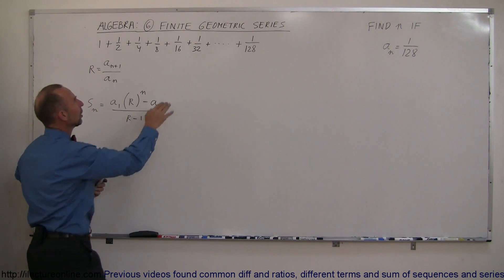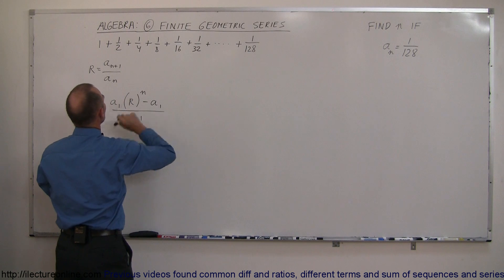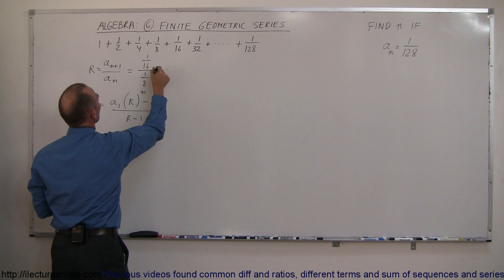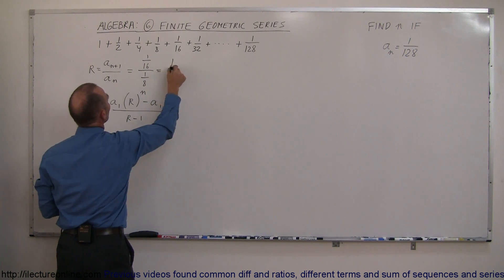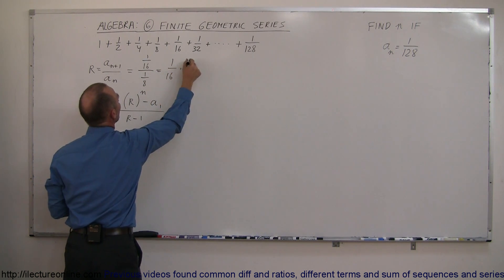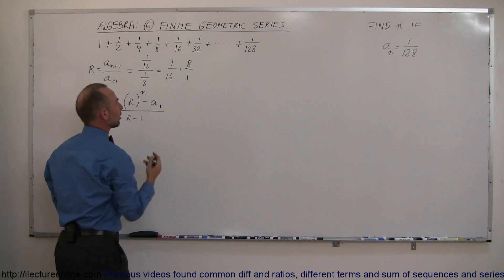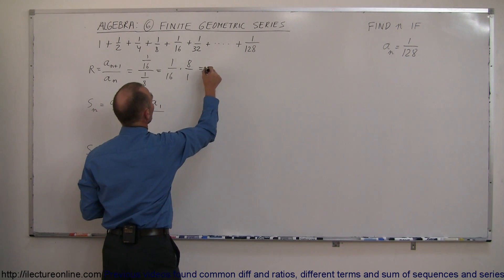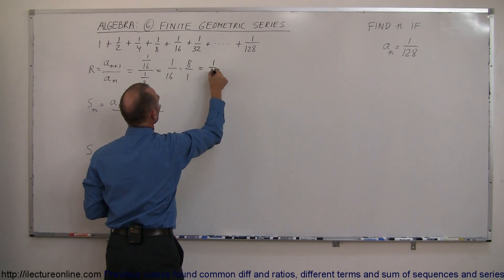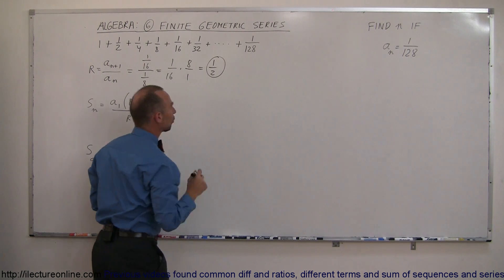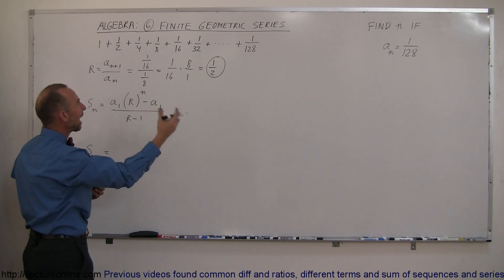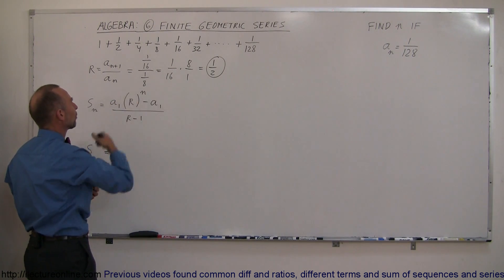To find the common ratio, we take any one number divided by the previous number. For example, we take 1/16 divided by the previous number 1/8, which equals 1/16 times 8/1 — because dividing by a fraction is the same as multiplying by its inverse — and that equals 1/2. So the common ratio is 1/2; each next number is half the size of the previous one.